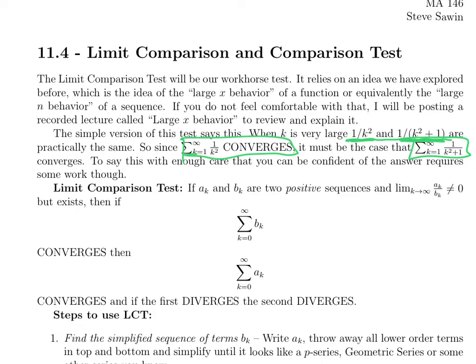Here's the limit comparison test. If you've got two sequences a and b, all the terms are positive, and if you take the ratio of the terms — for each k, take a_k over b_k — and watch what happens to that ratio as k goes to infinity, it converges to something other than zero. In practice this will always be 1. As long as their ratio converges to something other than zero, they either both converge or they both diverge. They do the same thing — they're buddies.